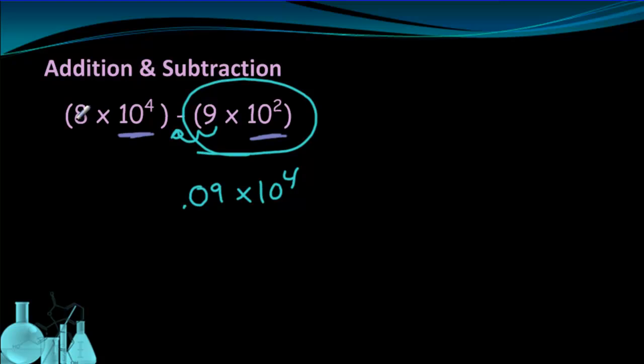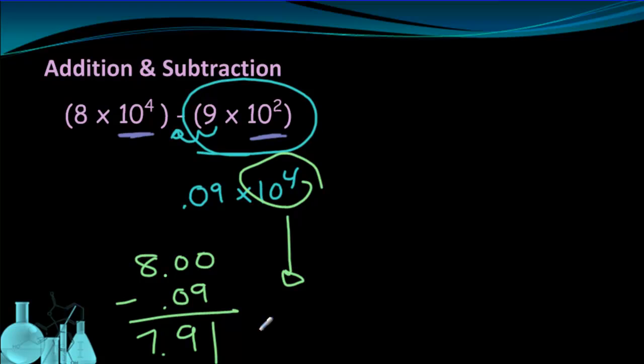Now my exponents are the same. I have 8 times 10 to the fourth here and I have 0.09 times 10 to the fourth here. So now, just like the last example with addition, I'm going to line up where the decimal places are and carry out the subtraction. So let's do that. We have 8 minus 0.09. This is really 8.00. We can put that there. And we get 7.91. Bring down the 10 to the fourth times 10 to the fourth and that is our answer.